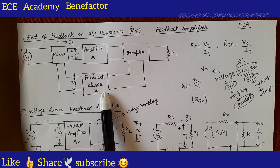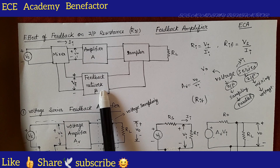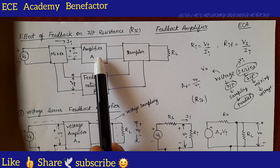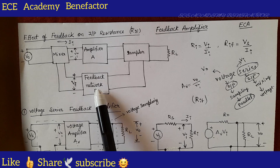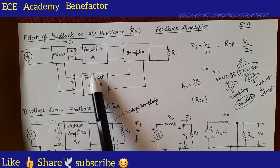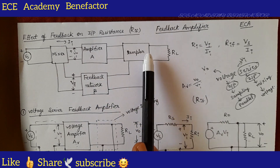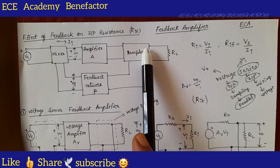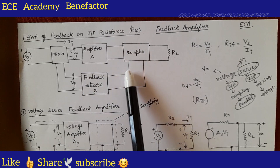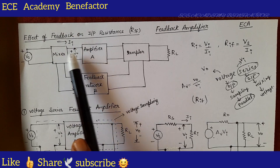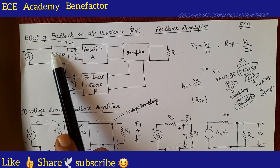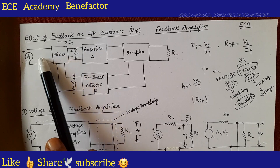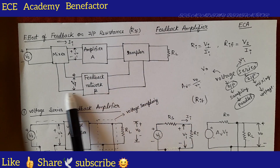This is the block diagram of a feedback amplifier which we have understood in the last video class. We have an amplifier A of gain A, a feedback network of ratio beta. To take a sample of the output voltage, we connect a sampler at the output of the amplifier, and the sampled signal is fed back and mixed with the incoming signal at the mixer at the input of the amplifier.